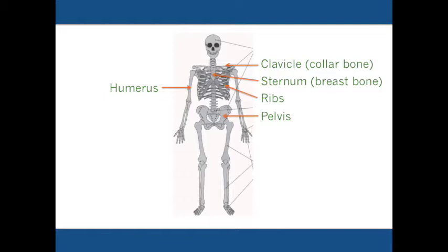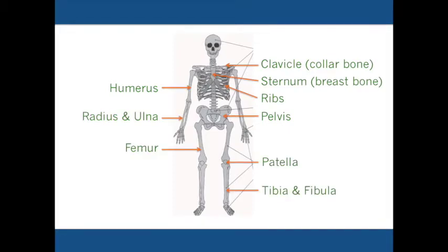Here are some of the bones that are relevant for fitness leaders: the clavicle or collarbone, sternum or breastbone which protects the heart, ribs, pelvis, humerus or upper arm bone, radius and ulna or lower arm bones — the radius is the one that adjoins the thumb — femur or thigh bone, patella or kneecap, and tibia and fibula or lower leg bones. The tibia is the shin and the fibula is the thinner bone behind it.